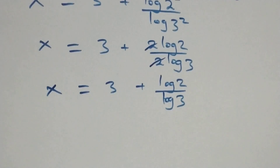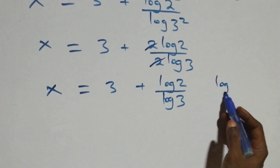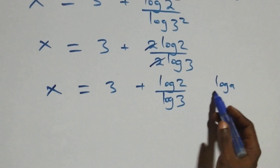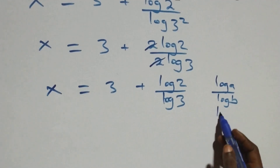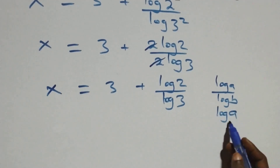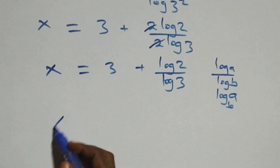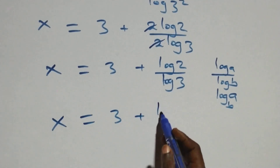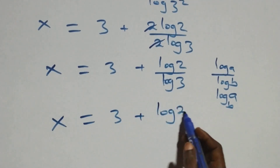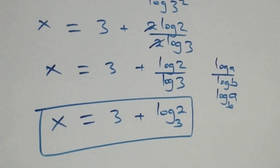Applying the change of base formula, where log a over log b is the same as log of a to base b, what we have here becomes x equals 3 plus log 2 base 3. So here we have the value of x as 3 plus log base 3 of 2.